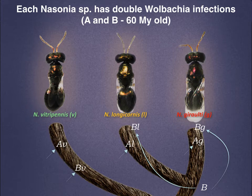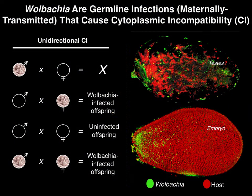Wolbachia are famous for causing a sperm-egg incompatibility called cytoplasmic incompatibility, or CI. Wolbachia live in the gonads, doing modifications to the sperm and egg that ultimately affect compatibility. When an infected male mates with an uninfected female, that gives an incompatible cross — no offspring or very few offspring are produced. All other crosses are compatible. The infected female can actually rescue that modification of the sperm, leading to compatibility.